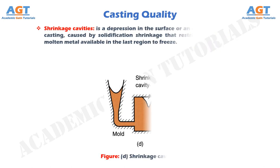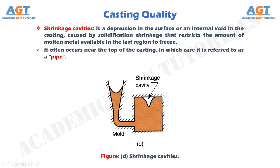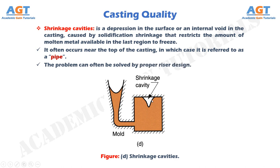Shrinkage cavities is a depression in the surface or an internal void in the casting, caused by solidification shrinkage that restricts the amount of molten metal available in the last region to freeze. It often occurs near the top of the casting, in which case it is referred to as a pipe. The problem can often be solved by proper riser design.